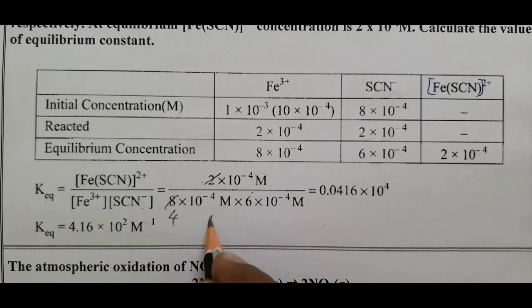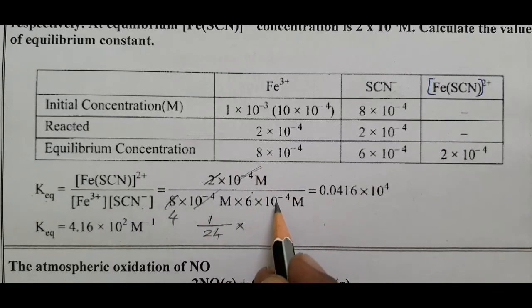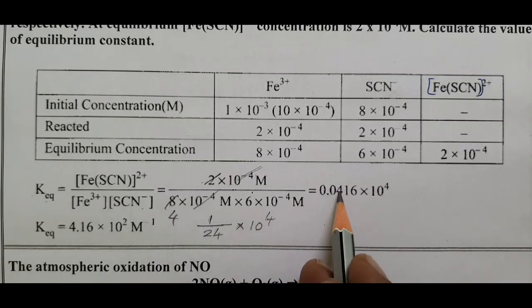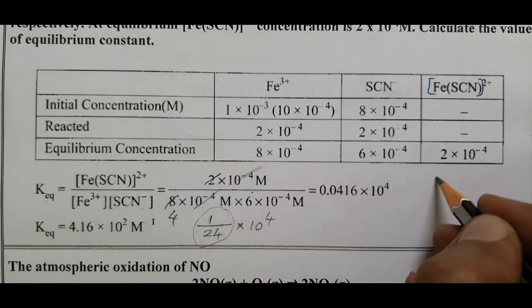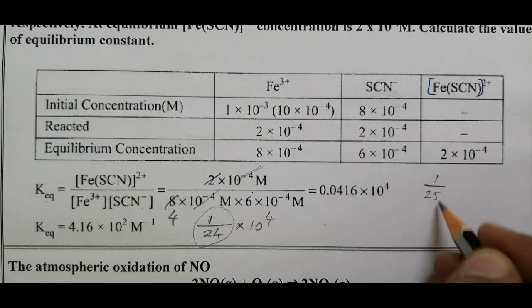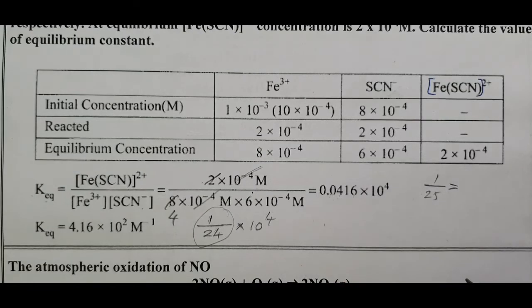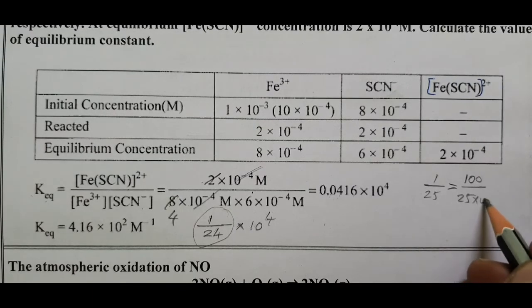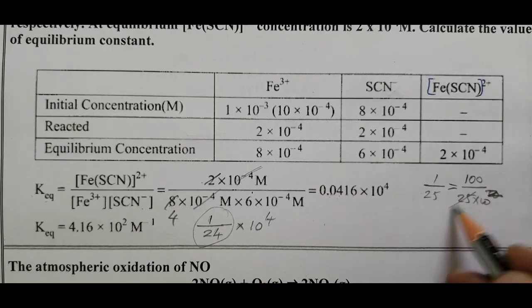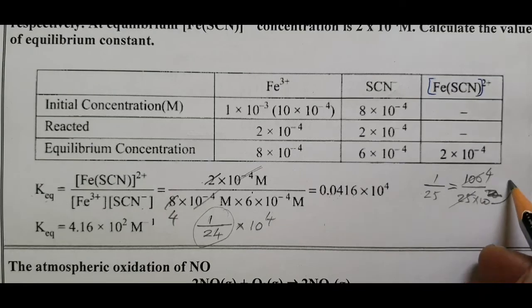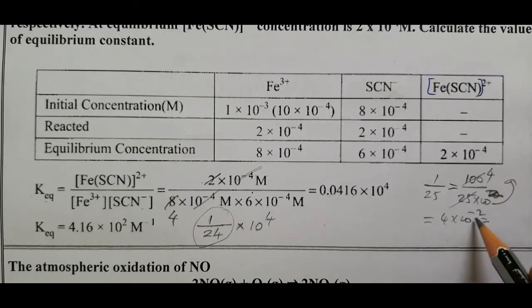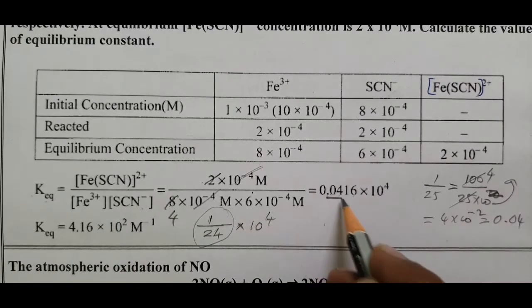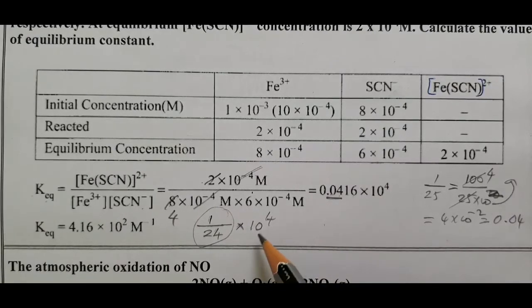1 divided by 24 equals approximately 0.0416. You can write it as 1/24 or approximately 1/25. So the equilibrium constant Kc ≈ 1/24.